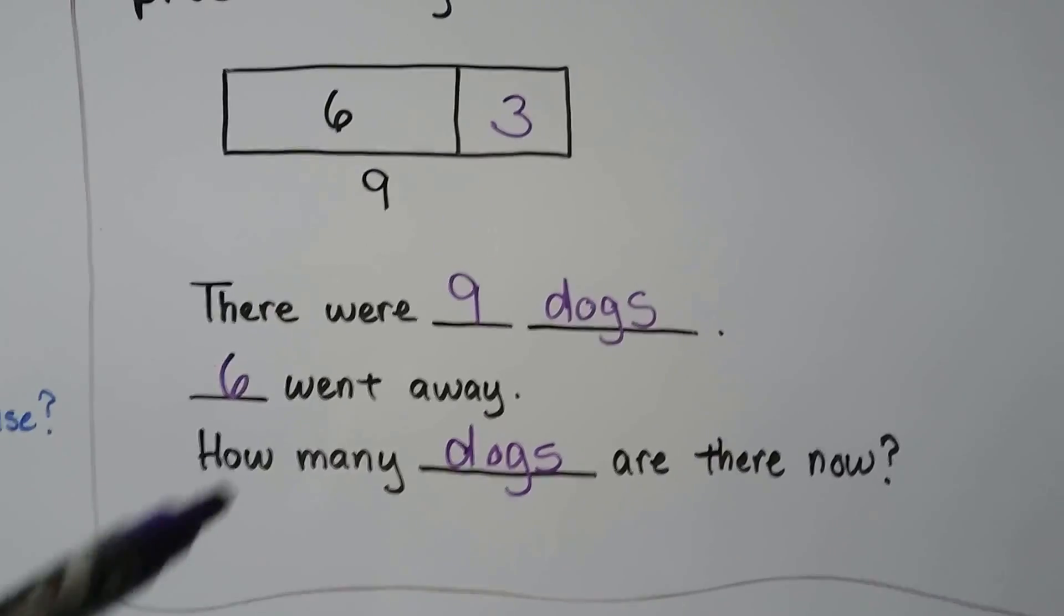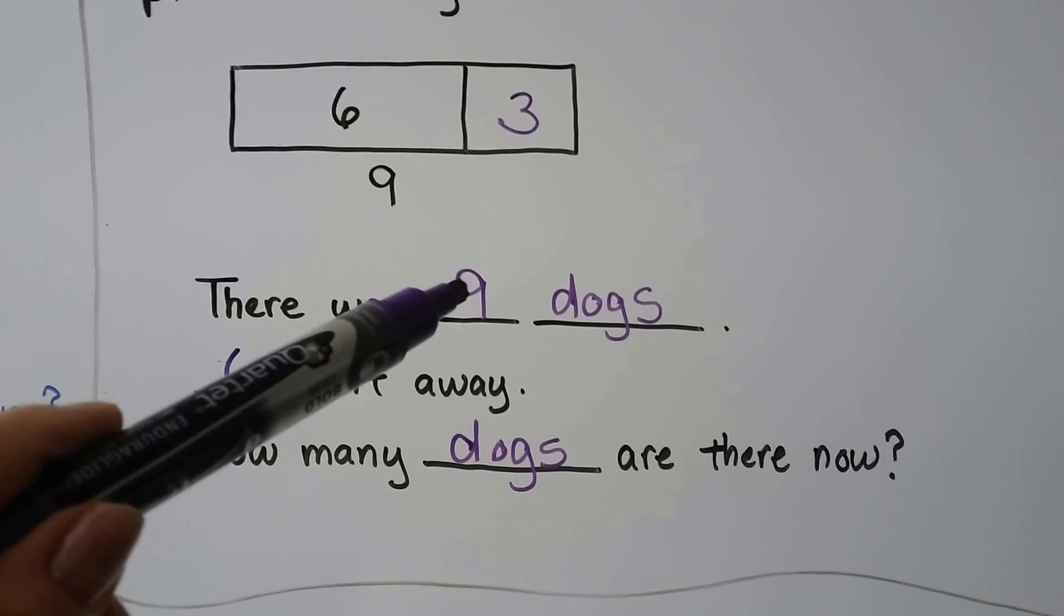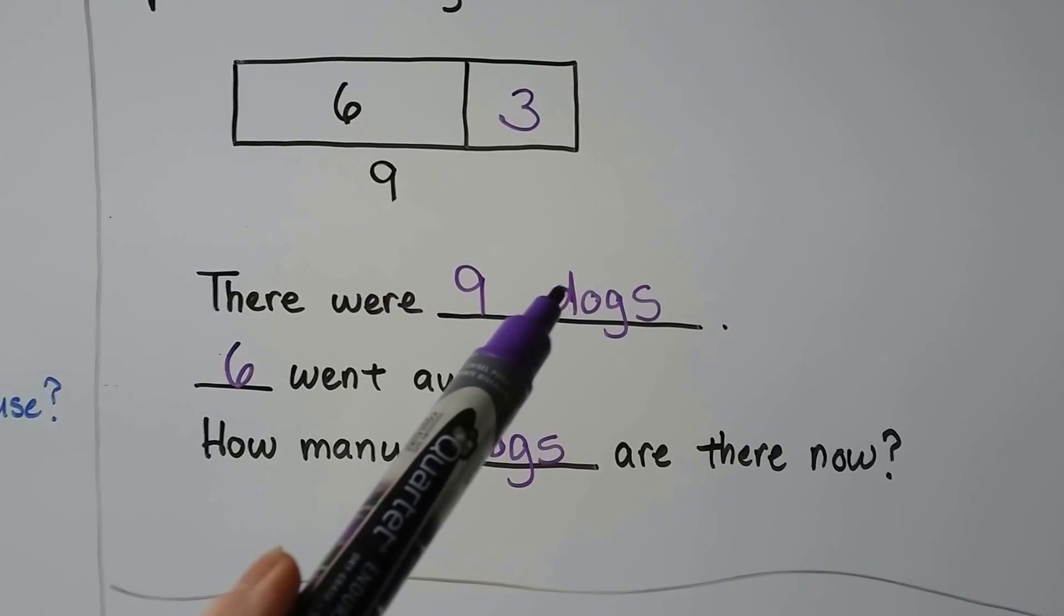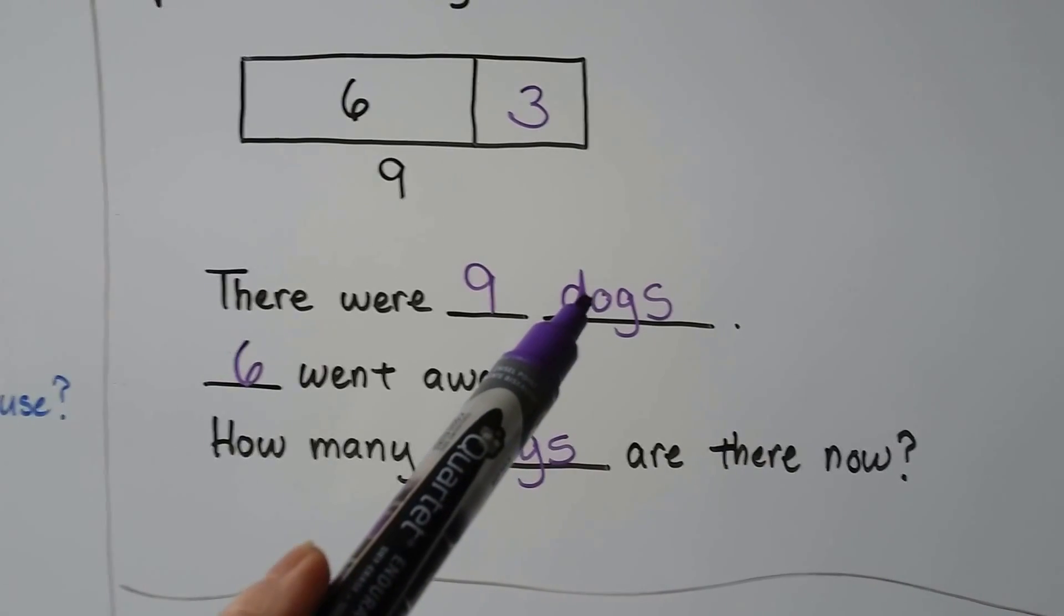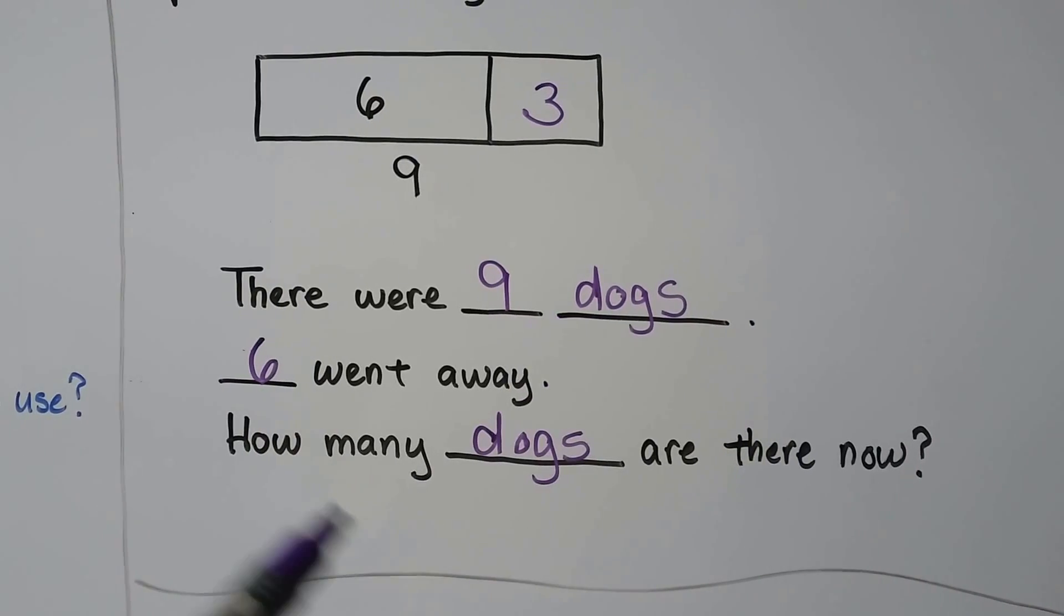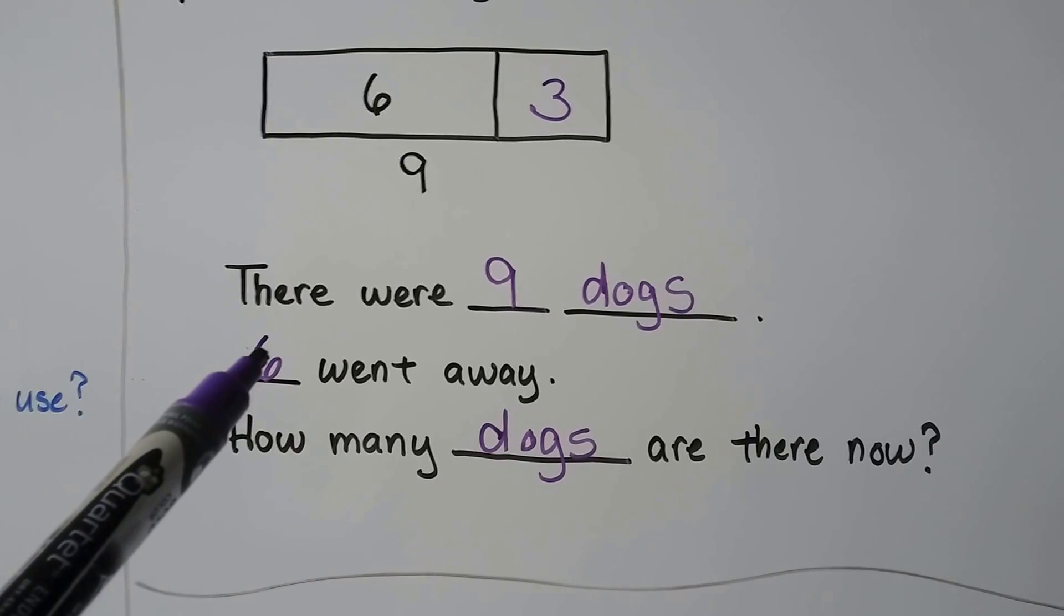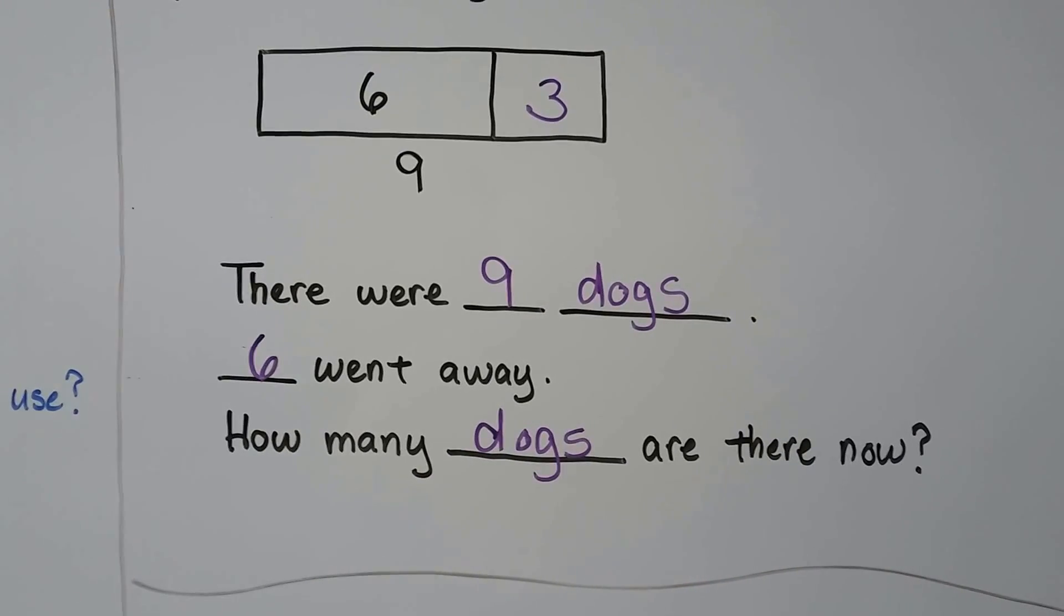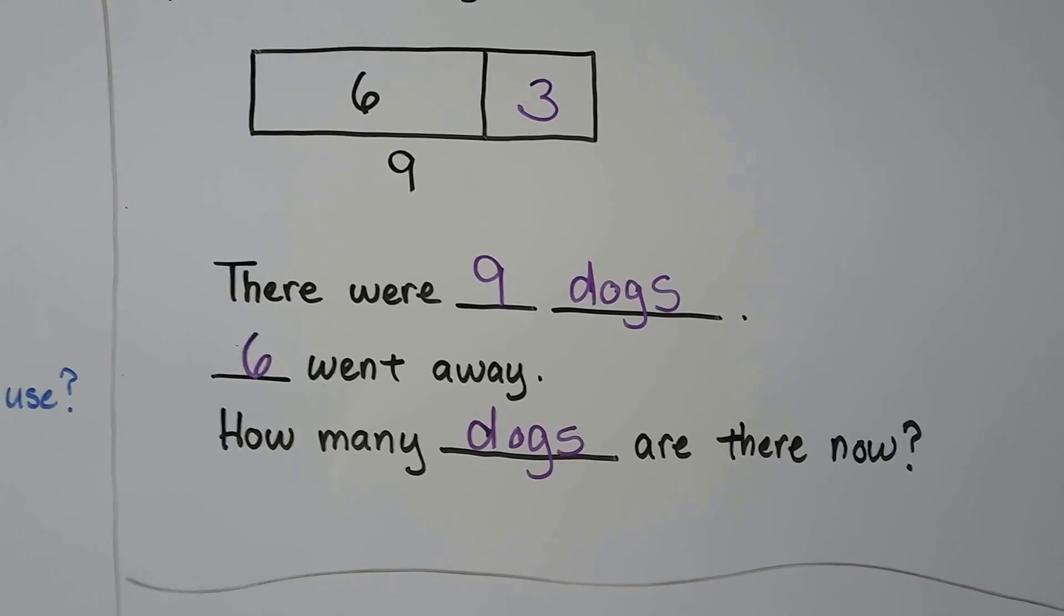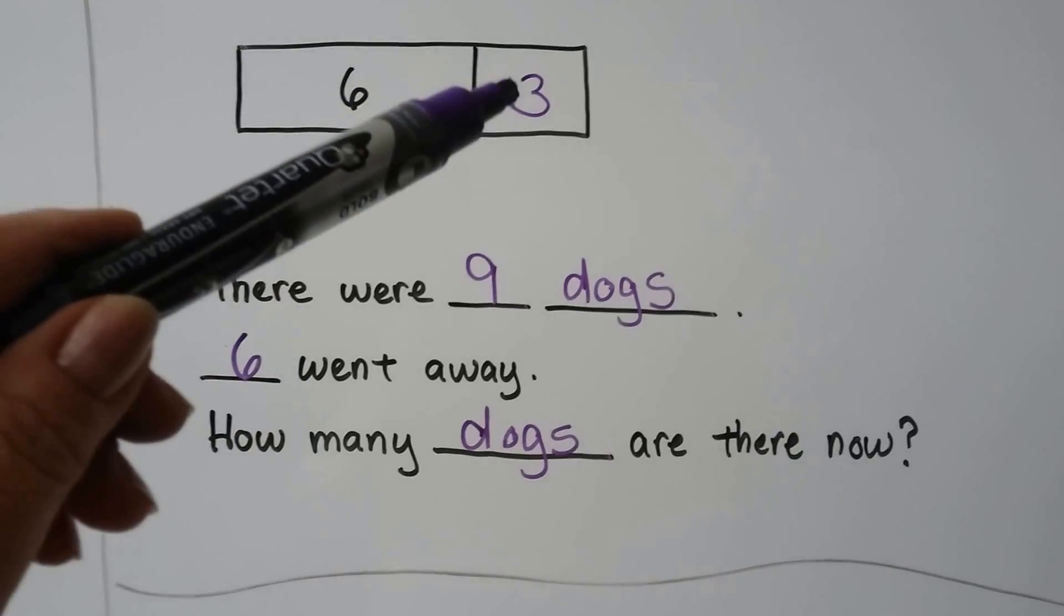And we can put any number in all here and we could put anything here. Cookies, hats, shoes, girls. We can put a number here that went away and make our own story problem. How many dogs are there now? There's three.